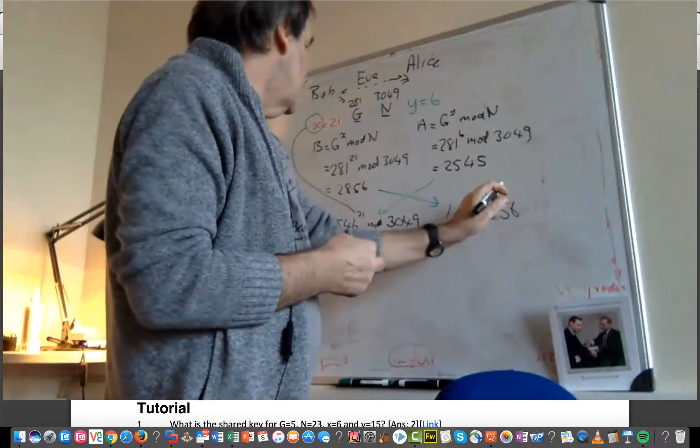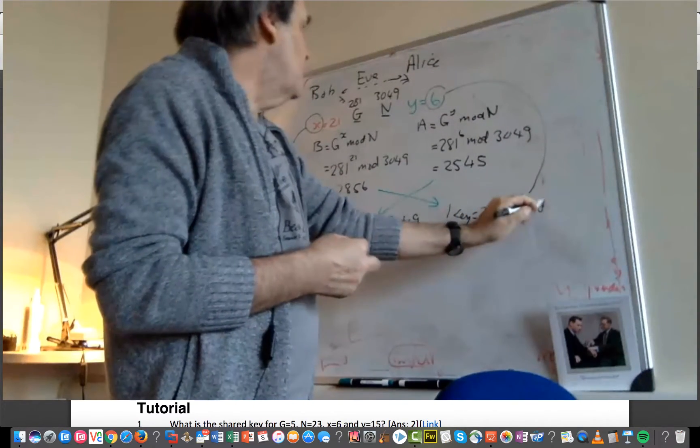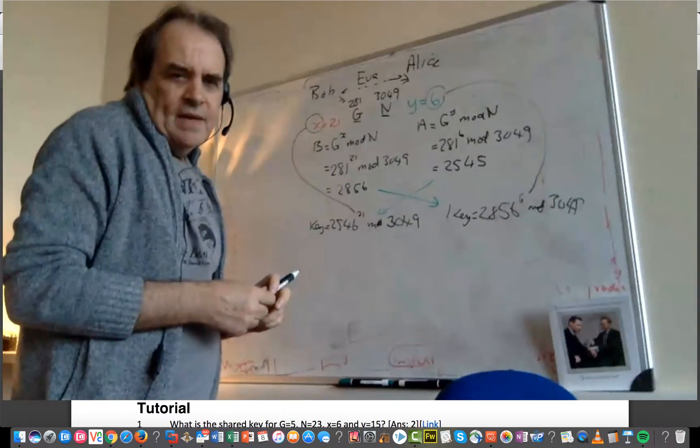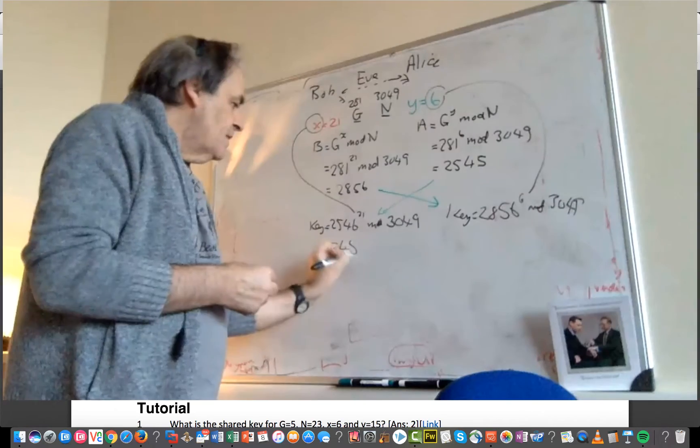And over here, she calculates the key as Bob's value, 2856, to the power of the Y value mod 3049. And then in this case, we should end up with a value of 452.